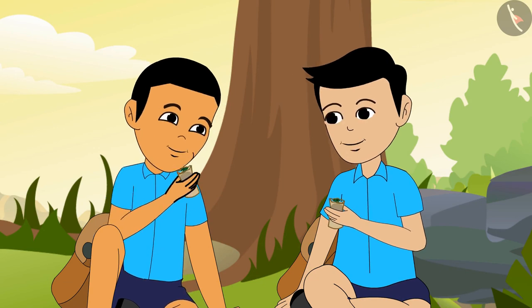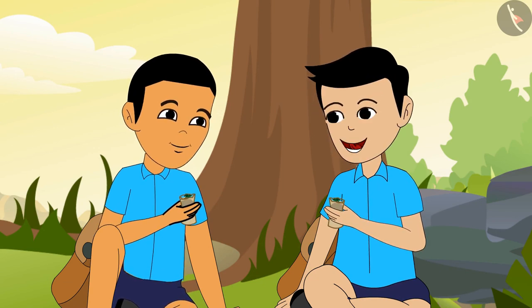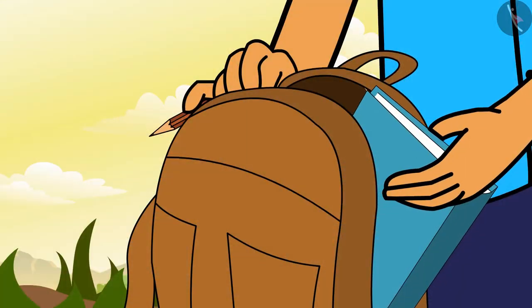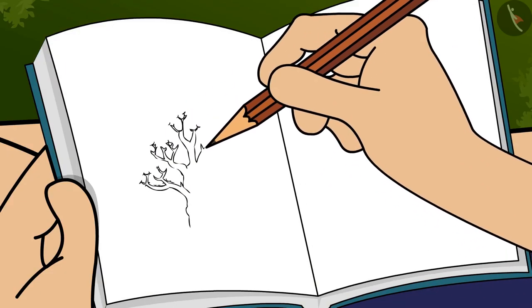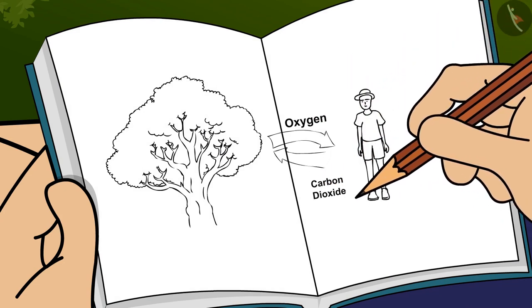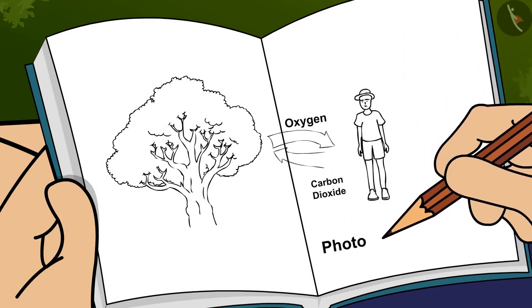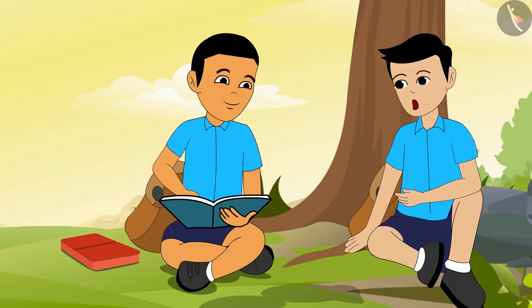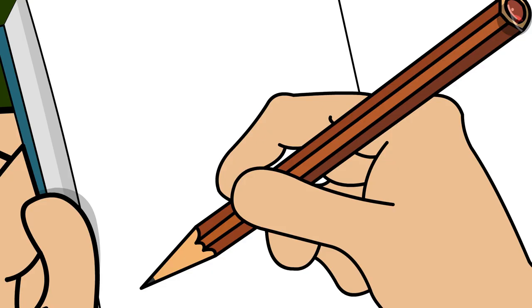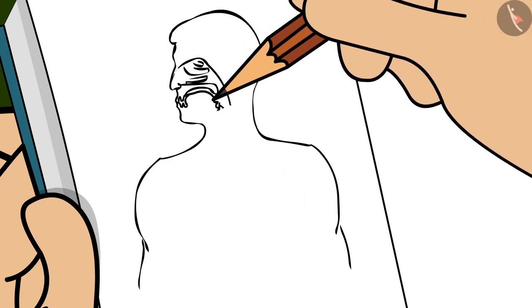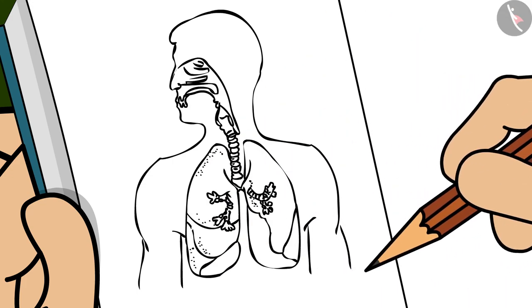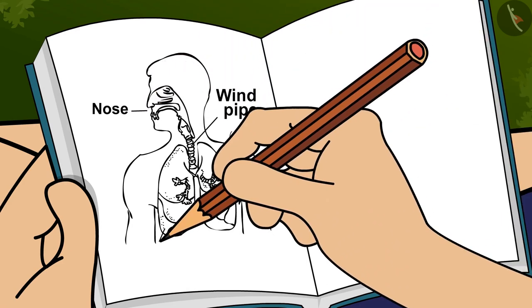Respiration is a very interesting process. Shyam, last year our teacher had taught us a few things about it. Come, let us draw and find out how much we remember. We had learnt that trees and plants give us oxygen and we give them CO2, or carbon dioxide, to use during photosynthesis. And we breathe in oxygen and breathe out carbon dioxide. We breathe through our nose, then the air passes through the windpipe or trachea, and then to our lungs.